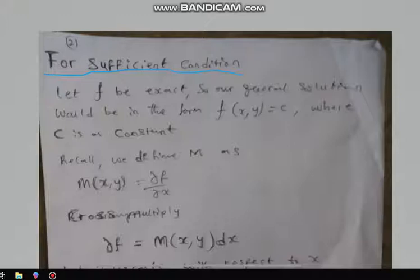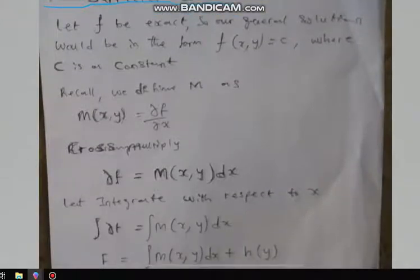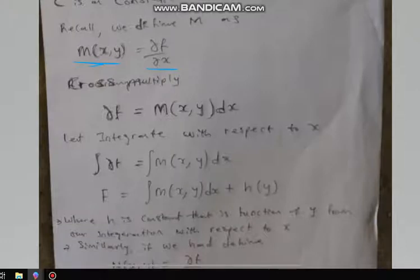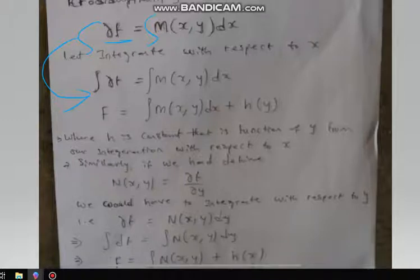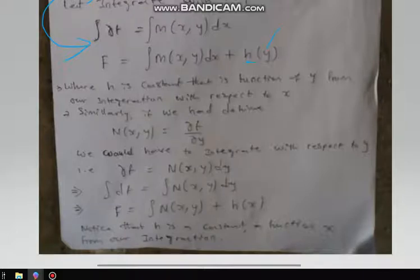Now I'm going to take you to the sufficient condition. Let f be exact, so the general solution will be of the form f(x, y) = C, some constant. Recall that I defined M to be ∂f/∂x. Cross-multiplying gives df = M dx, and integrating with respect to x gives f = ∫M dx + h(y), where the constant from the indefinite integral is h, a function of y.